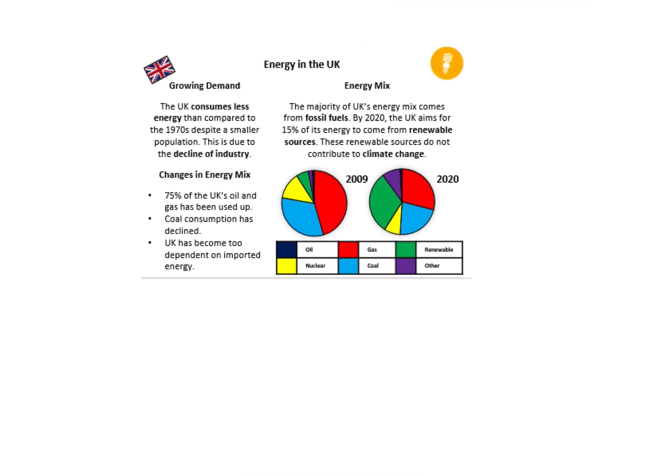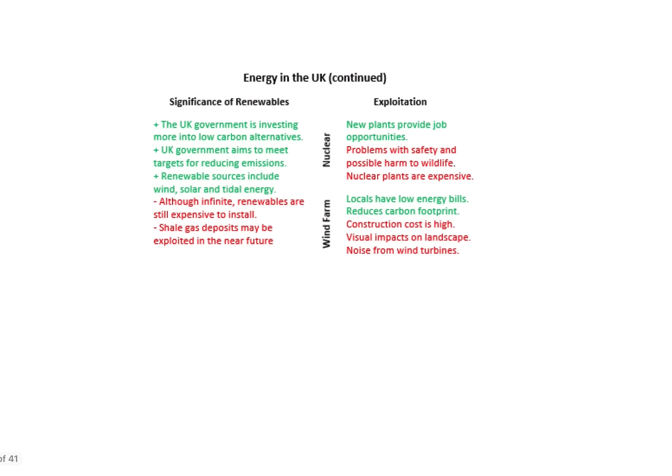Energy in the UK and the changing energy mix: 75% of the UK's oil and gas has been used up, coal consumption is declining, and the UK is becoming reliant on imported energy, mostly from fossil fuels. The government is trying to move towards more renewable sources. Evaluate renewables — lower carbon emissions are a benefit, but new plants bring issues with safety, wildlife, displacement of people, and water. Fracking and its impact on local people is also worth discussing.